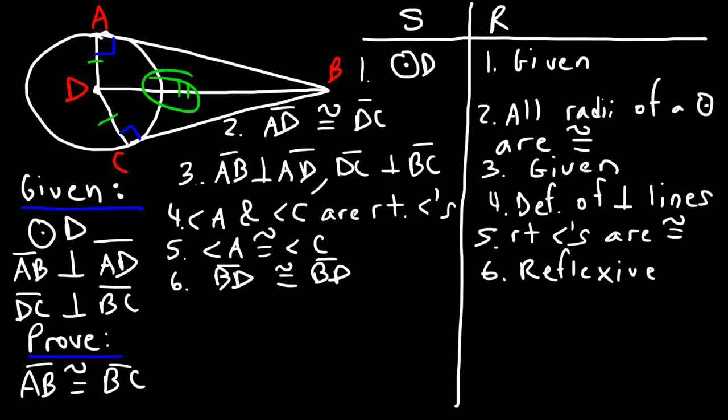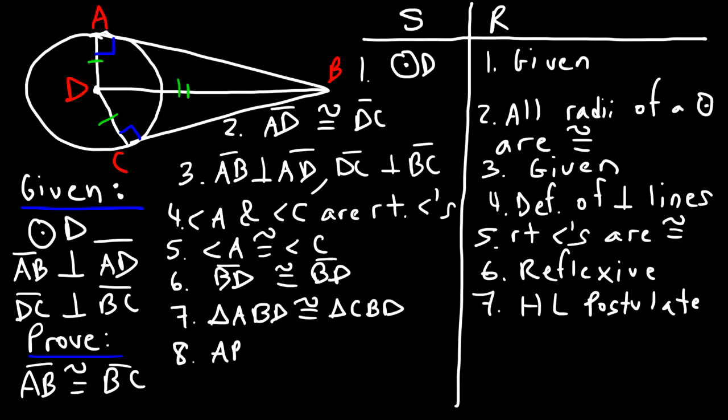The hypotenuse is clearly congruent and the legs are the same. So in step seven, we can make the statement that triangle ABD is congruent to triangle CBD, and this is based on the HL theorem or the HL postulate.